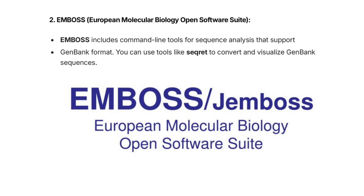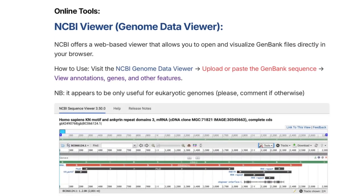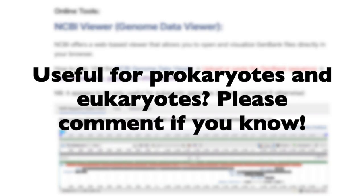Another command-line tool for sequence analysis is EMBOSS — the European Molecular Biology Open Software Suite. It includes command-line tools and you can use a tool like Seqret within it to convert and visualize your GenBank sequences. The NCBI also has a Genome Data Viewer — a web-based viewer that lets you open and visualize GenBank files directly in your browser. Go to the NCBI Genome Data Viewer, upload or paste the GenBank sequences, and view annotations, genes, and other features. At the time of making this video it appeared to be useful only for eukaryotic genomes, so please let me know in the comments if it's also available for prokaryotes.